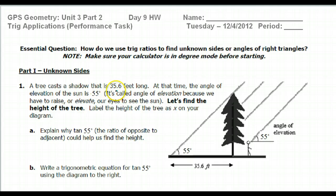A tree casts a shadow that is 35.6 feet long. At that time, the angle of elevation of the sun is 55 degrees, shown here. Let's find the height of the tree. This is a right triangle. The height of the tree, I'm just going to call that x.